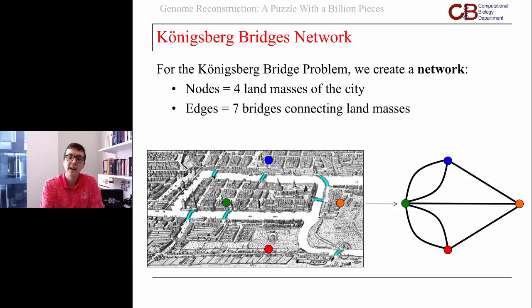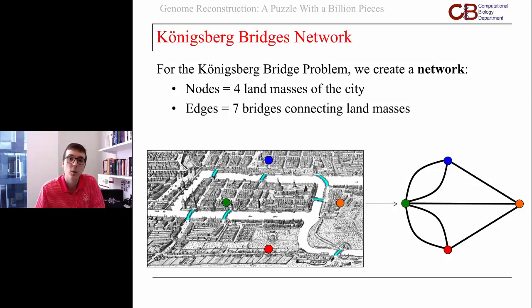What we're looking for in the network became known as an Eulerian cycle in honor of Euler. That's a cycle or a walk through the network returning to where it started that crosses every edge exactly once. Think Eulerian E edge. We use every edge exactly once.